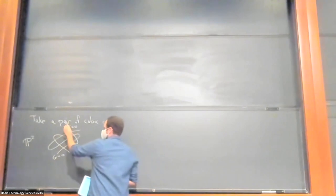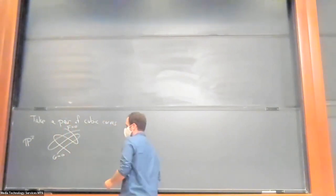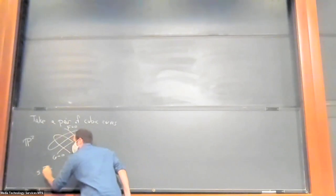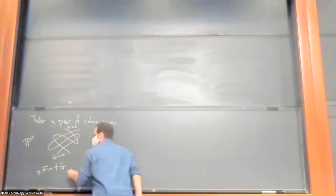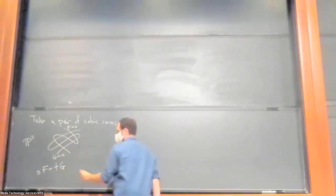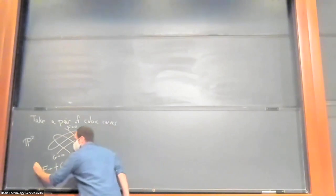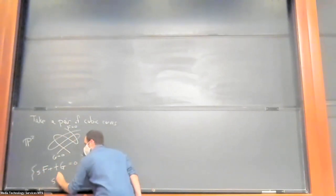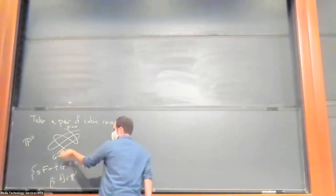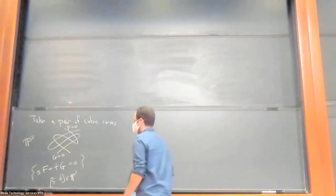So I'm working over C, but as usual I'll draw the pictures over R because of physical constraints. Now I want to look at linear interpolations between these two cubics. So this is called a pencil of cubics. So for any S and T in CP1, there's a cubic, which is something in between this F and this G.